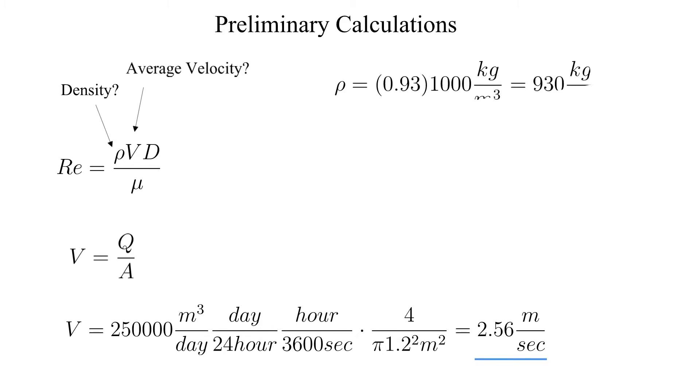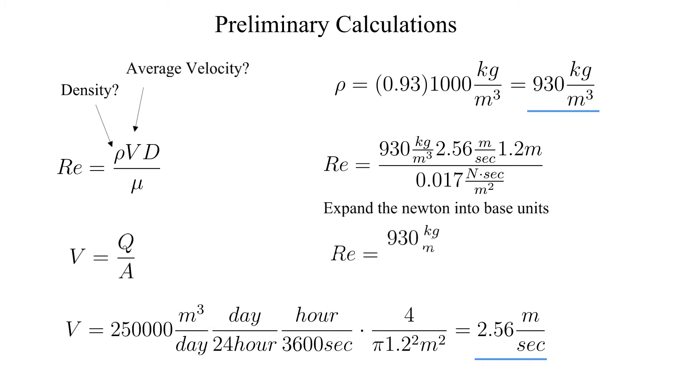Next up is to calculate the density. We will use the specified specific gravity and we'll use 1000 kilograms per cubic meter as the density of water. Now we have everything we need to calculate the Reynolds number. Let's do that. We'll plug in the numbers and the units to obtain the result of a little bit over 168,000.